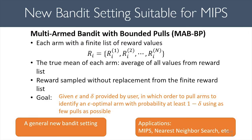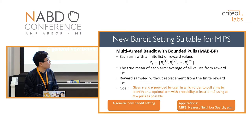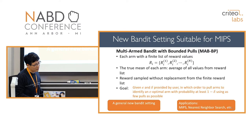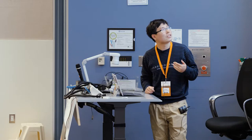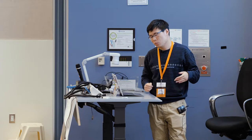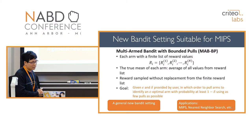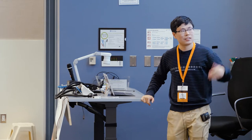We introduce a new bandit setting suitable for solving MIPS, called Multi-Arm Bandit with Bounded Pools. In this setting, each arm is associated with a finite reward list, the true mean is the average of all values in that list, and every time the user pulls an arm they receive a reward sampled without replacement from the finite list. The goal remains the same: determine the order to pull arms to identify an epsilon-optimal arm. This is a general setting that can model not only MIPS but also other problems such as nearest neighbor search.